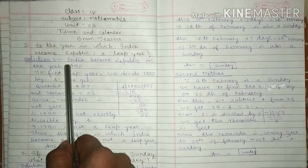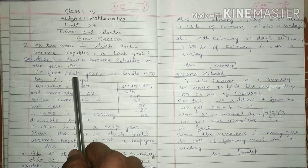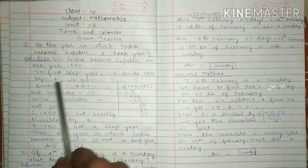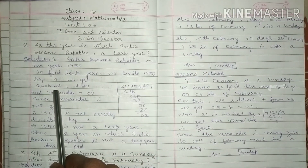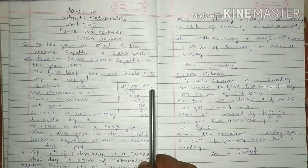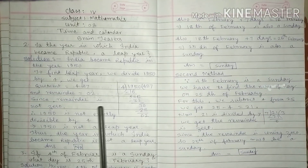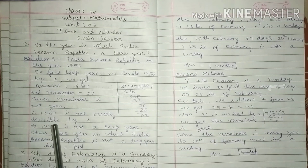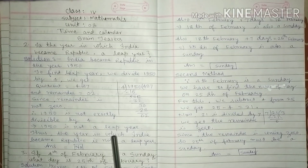For the solution of this question, India became republic in the year 1950. To find if it is a leap year, we divide 1950 by 4. We get 487 as quotient and 2 as remainder. Since remainder is not 0, therefore 1950 is not exactly divisible by 4.